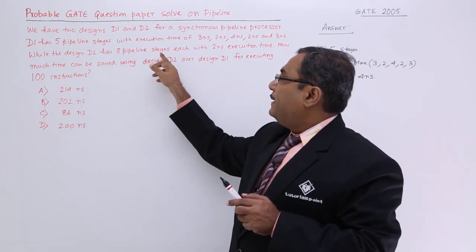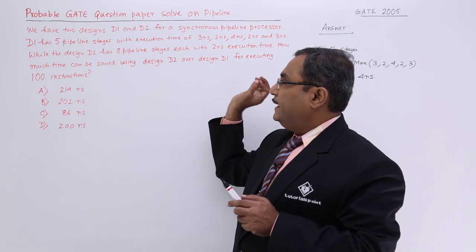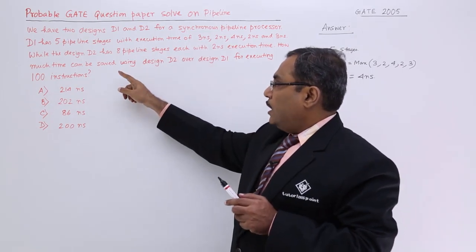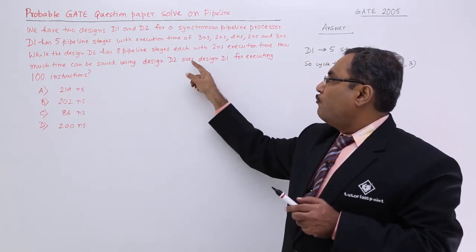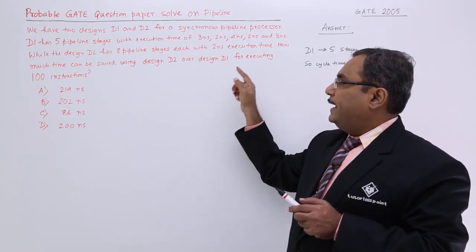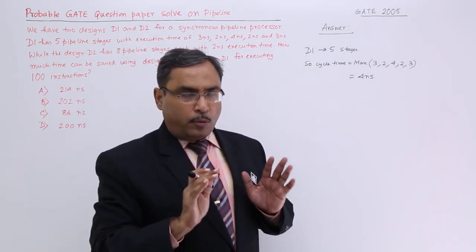D2 is having 8 pipeline stages with 2 nanosecond execution time. How much time can be saved using design D2 over design D1 for executing 100 instructions? That is the main problem.